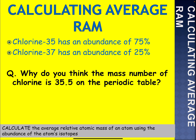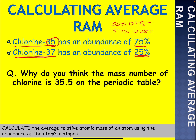Here's a question on calculating the average relative atomic mass. In the exam, they will give you the abundance of each isotope — 25% is chlorine-37, 75% is chlorine-35. They will either ask you to calculate the relative atomic mass, or ask why the mass number of chlorine is 35.5 in the periodic table. You do: 35 × 75% (0.75), then 37 × 25% (0.25), add both answers, and you should get 35.5.